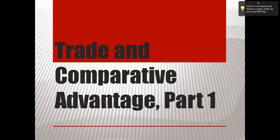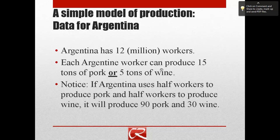This is the first part of our lecture on trade and comparative advantage, and we're going to start with a very simple model. We're going to have two countries and two goods. Our first country is going to be Argentina, and Argentina is going to have 12 workers — we could think of that as 12 million workers. Argentina's workers can work in one of two industries: either a pork industry or a wine industry. Argentina is going to initially split its workers equally between the two industries so that they can have some things to eat and some things to drink.